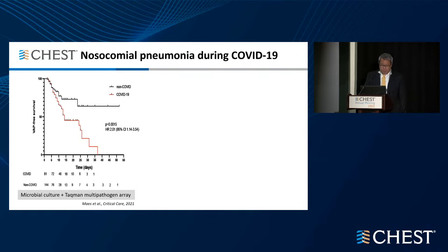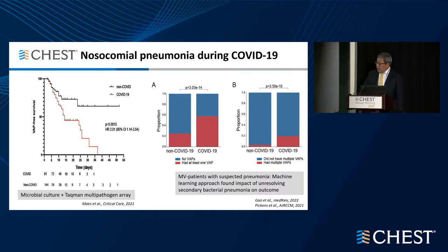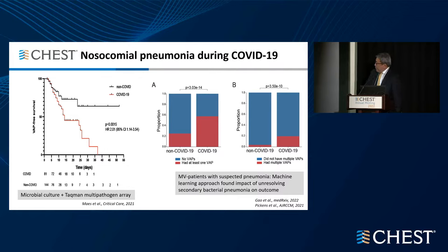During COVID, people reported that having COVID-19 increased the risk of having VAP. This is a study from the UK using routine microbial cultures plus a more sensitive TAC-MAN multi-panel pathogen array showing how this compares to non-COVID. You can see in this graph comparing non-COVID and COVID patients that there are significantly higher patients with at least one VAP, and on the right, increased numbers of patients with multiple VAP in COVID-19 patients.